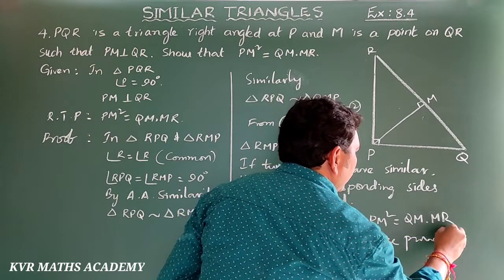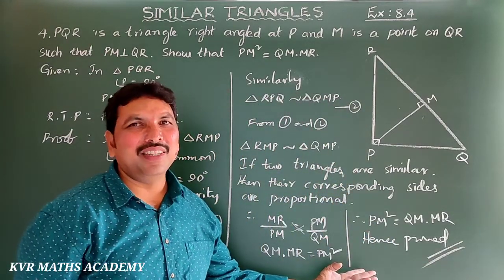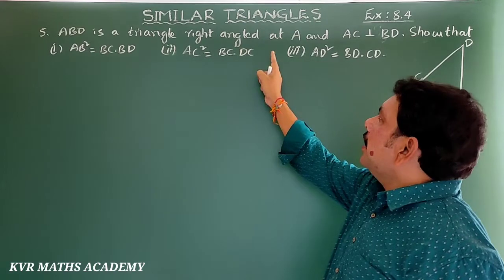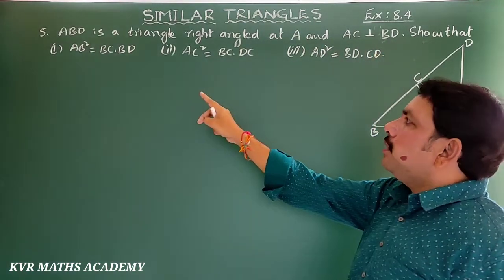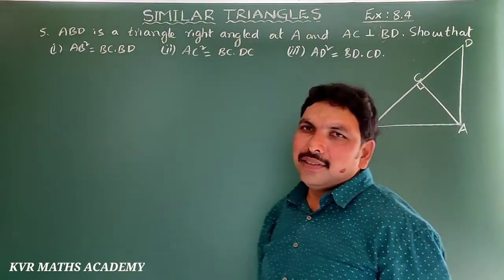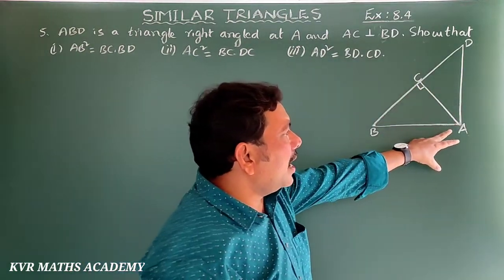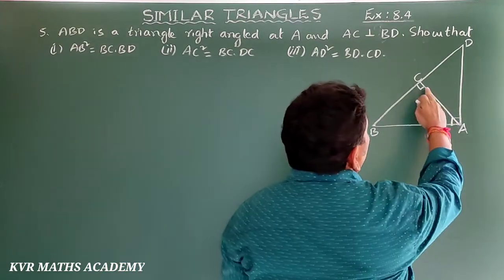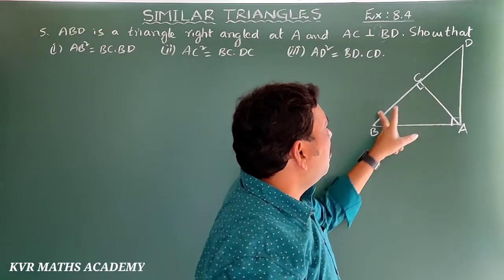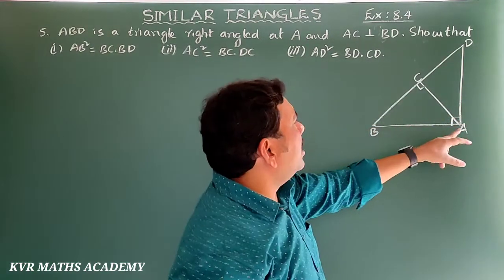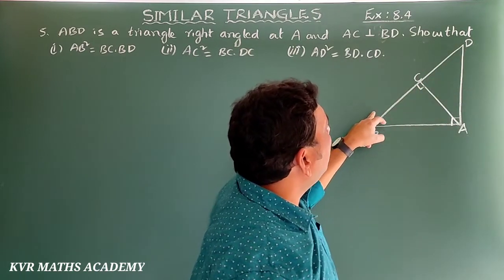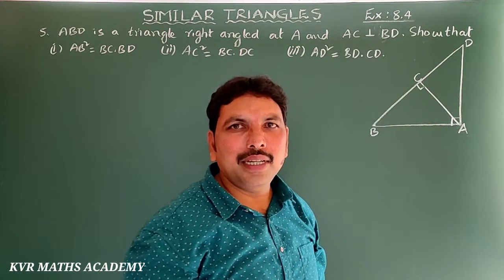Hence proved. Next, fifth question: ABD is a triangle right-angled at A, and AC is perpendicular to BD. Show that AB² = BC × BD, AC² = BC × DC, and AD² = BD × CD.